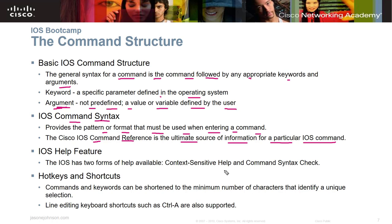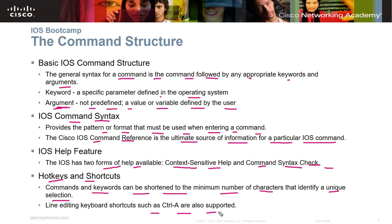The IOS has two forms of help: context-sensitive help and command syntax help. You can pull up help if you're not sure about a command, how to finish a command, or what commands are available — we'll learn that later on. Commands and keywords can also be shortened to a minimum number of characters that identify a unique selection. For example, if there's only one config command available, you can just type 'co' or 'con'. Line editing keyboard shortcuts such as Ctrl+A are also supported.